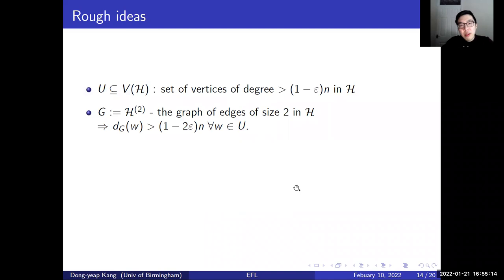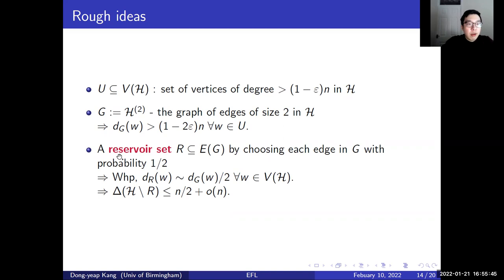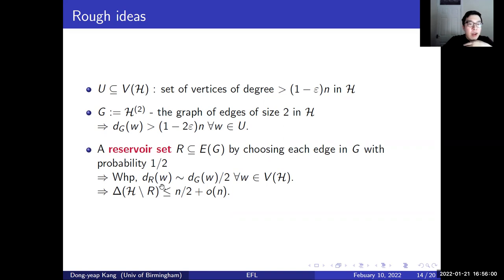To be more precise, we define the set U of high-degree vertices in H whose degree is close to n, and consider the graph G of edges of size 2 in H. By definition, all vertices in U have degree very close to n in G as well. We consider a reservoir set R of edges in G by choosing each edge in G with probability one-half. By the Chernoff bound, with high probability, for every vertex w, its degree in R is close to half of its degree in G, so after deleting the edges in R, the resulting hypergraph has maximum degree at most roughly n/2.